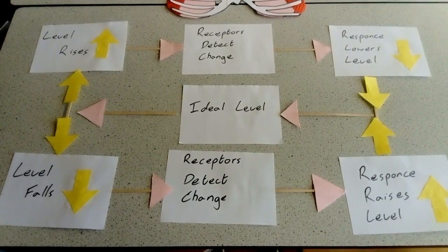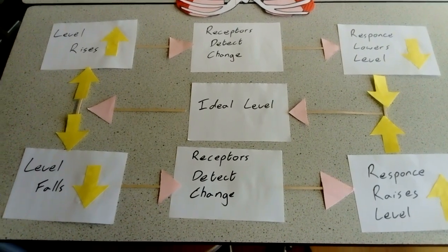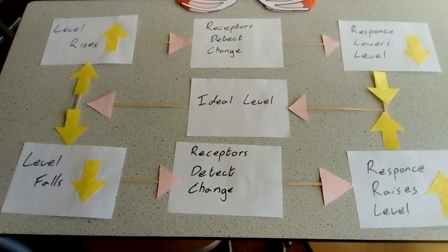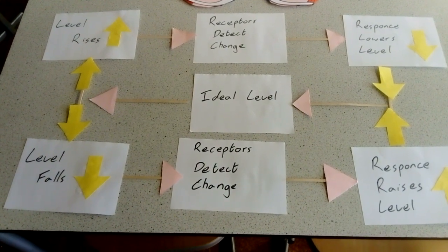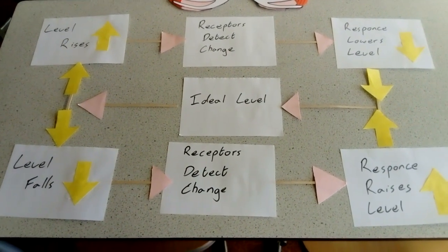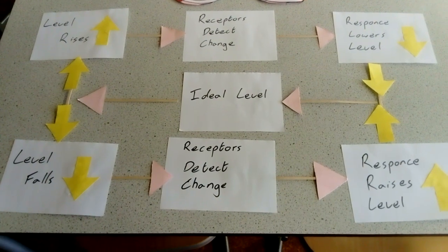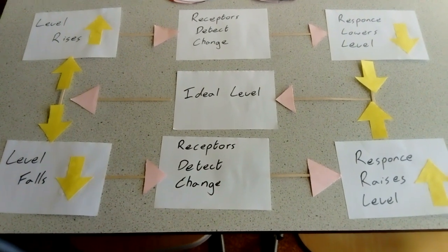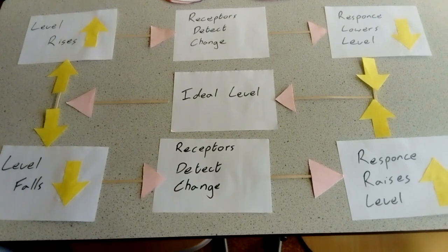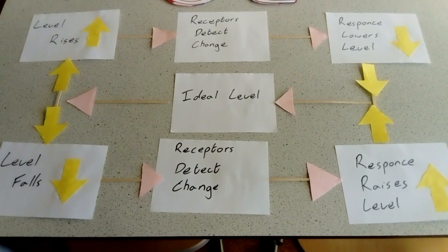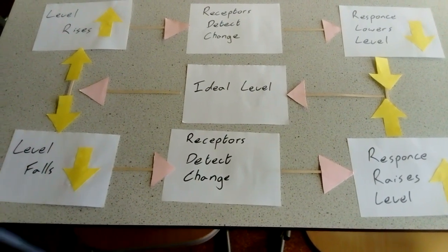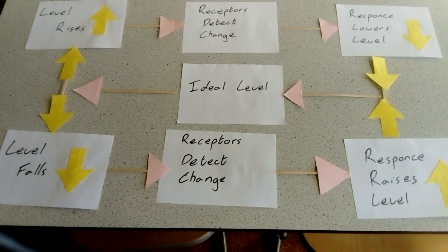Negative feedback is the process whereby the production of one hormone generally will go and turn off the production of the hormone that's causing that hormone to be produced. It's all about enabling the body to get back to an ideal level.